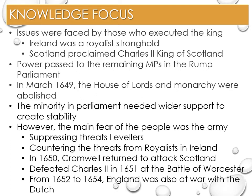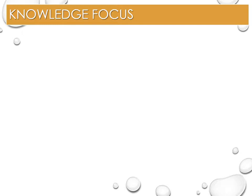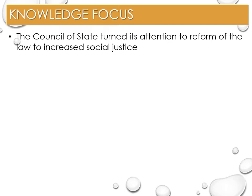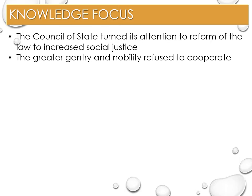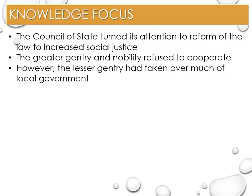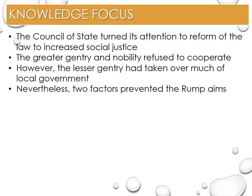To raise money for warships, a monthly assessment was used, raising as much as Charles' entire annual revenue and modelled on ship money. However, unlike ship money, this tax was authorised by Parliament. While the army defended the regime, the Council of State turned its attention to reform, especially reform of the law and increased social justice, believing this would increase popular support of the regime. The greater gentry and nobility refused to cooperate with the regime, questioning its basic legitimacy to rule. As a result, the lesser gentry had taken over much of the local government in roles traditionally filled by the greater gentry.